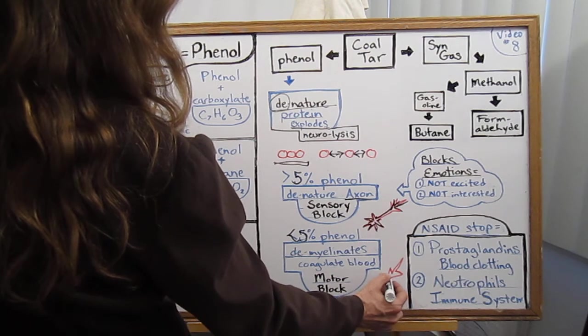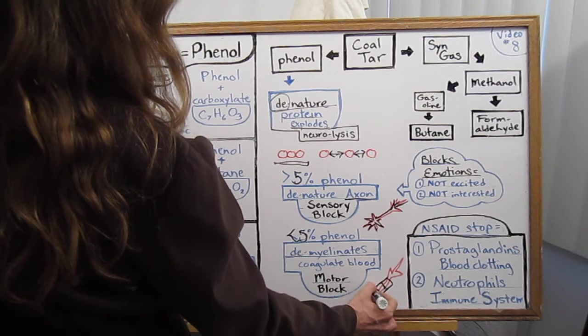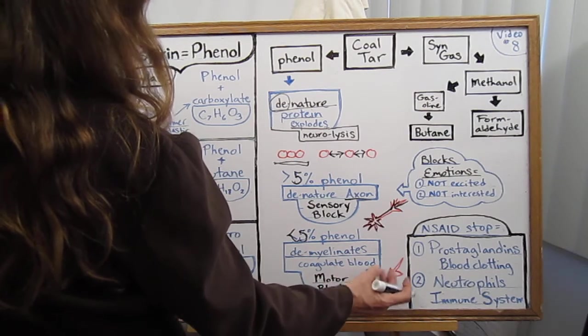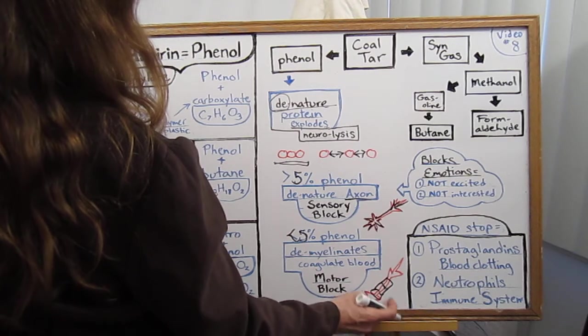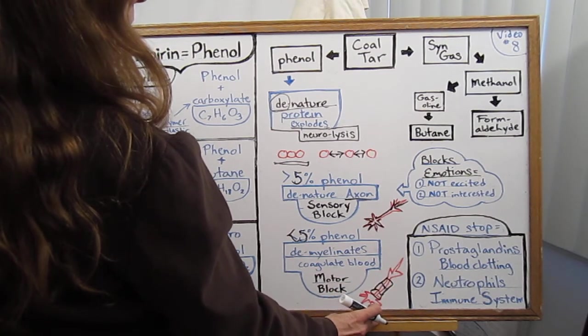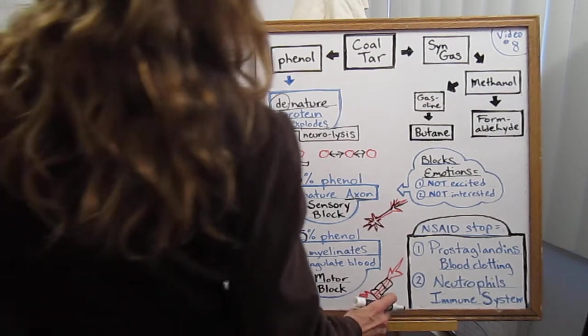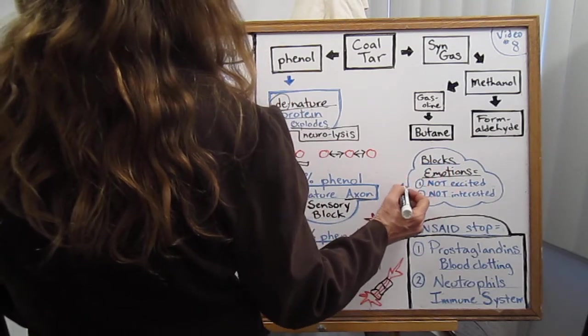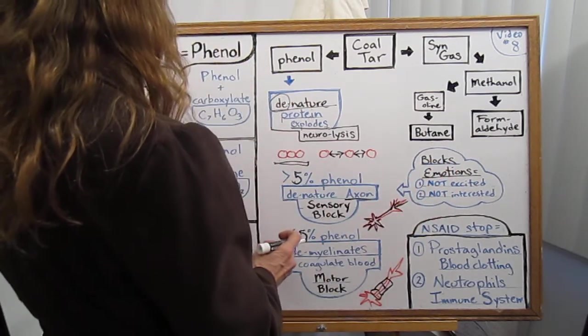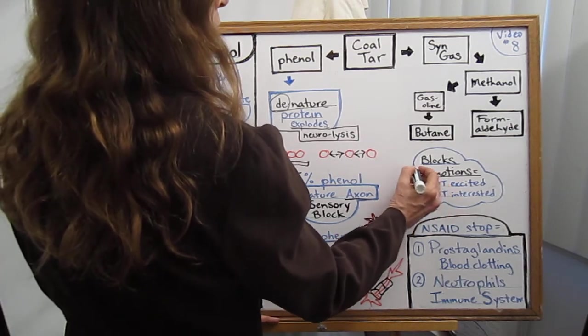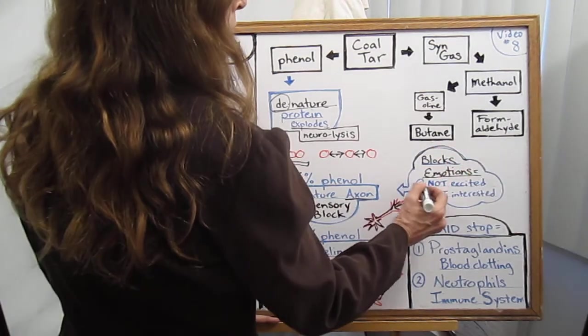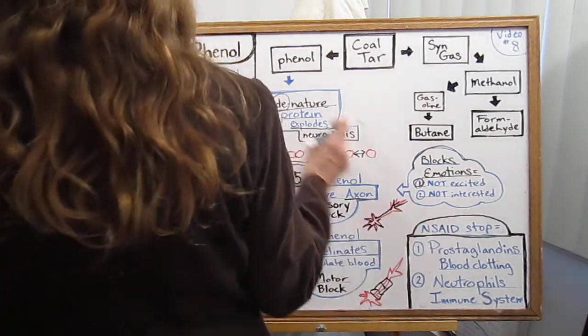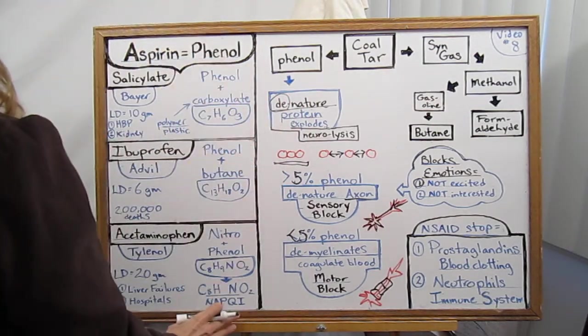You get greater than five percent phenol and now you're damaging the neuron to the point it doesn't feel anything. So it's a neuron block, it's a motor block, it's demyelinating, which is the insulation to allow current. There's no more current if there is no insulation. So they've discovered recently that when you're tampering with the sensitivities of the immune system, you're also blocking emotions, and this means them not to get excited about anything, much less interested.